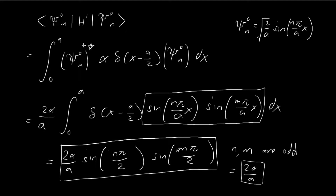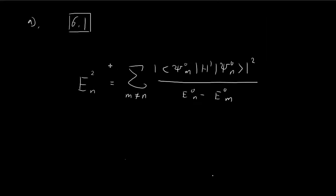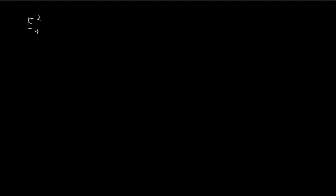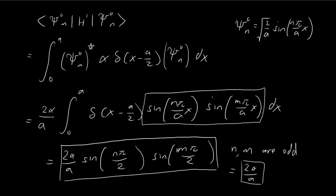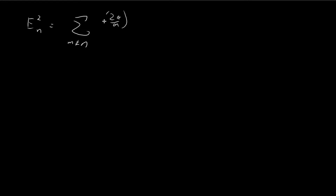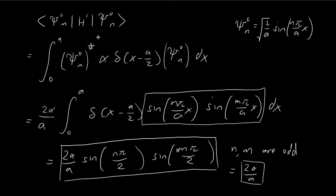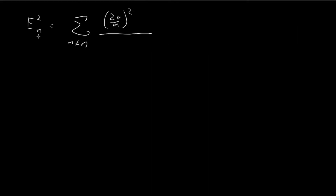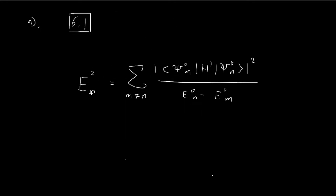Now that we've evaluated the numerator, we substitute it back into the summation. The second order correction to the energy levels is the sum where m is not equal to n. We substitute in 2 alpha over a and square the entire term. Note that the numerator is only nonzero when both n and m are odd. So implicitly n is odd and all the m terms in the sum are odd — there are no second order corrections when n is even.